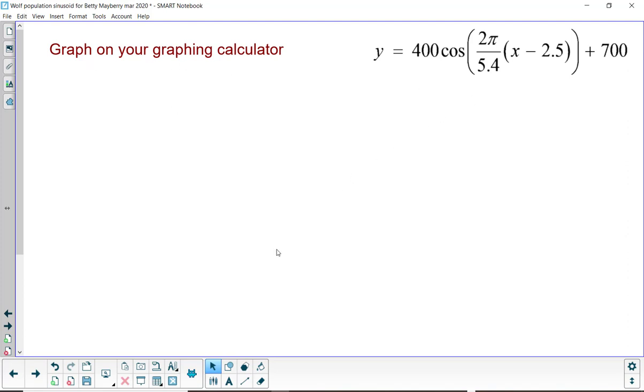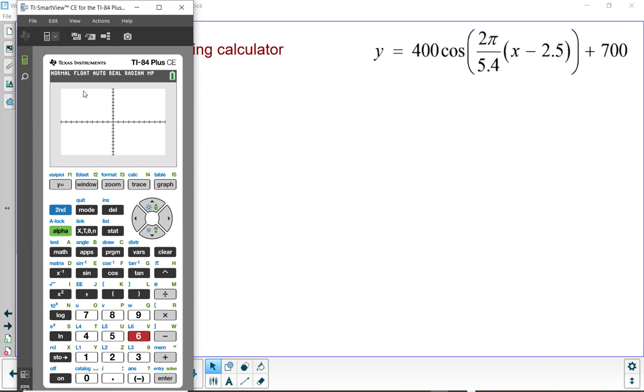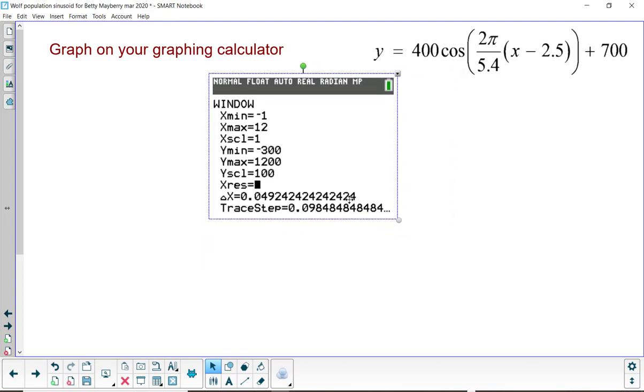Let's go ahead and graph this on your graphing calculator. Grab your calculator. The TI-84 CE is what we'll use. Here's my calculator. I'm going to first put in an appropriate window. I'm thinking I'd like the x-min to be negative 1 and the x-max to be 12 and steps of 1. That would be years. Y-min negative 300 to y-max of 1,200 because 1,100 is our max. And I'll show that every 100.